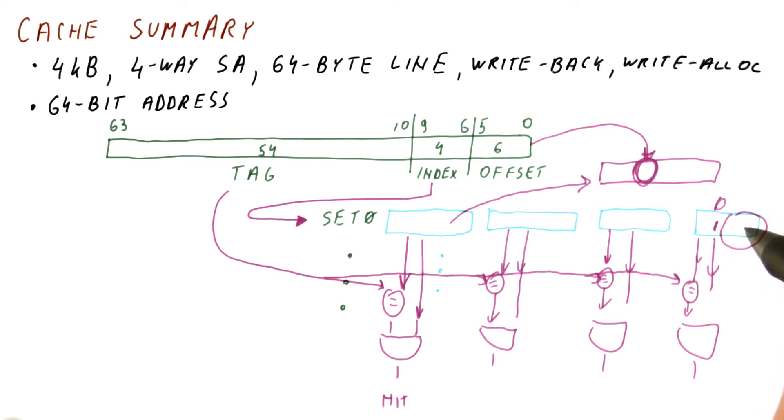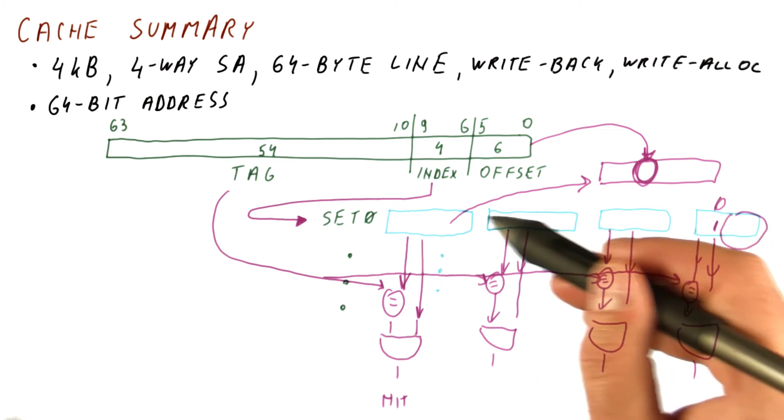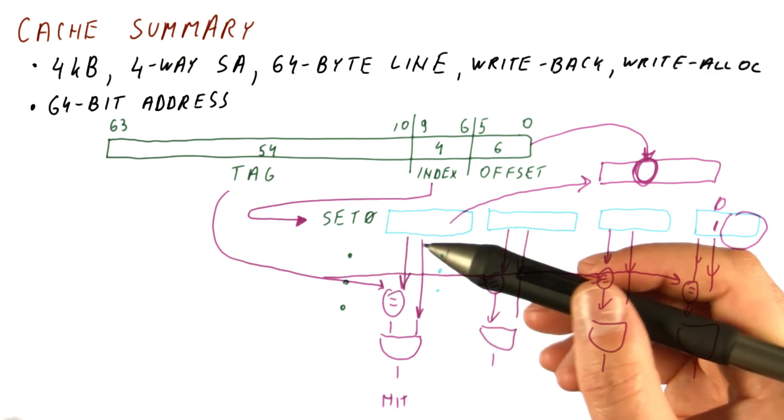then we simply bring in the new block. We update the tag and everything here. We set the LRU counters accordingly and we then supply the data to the processor.